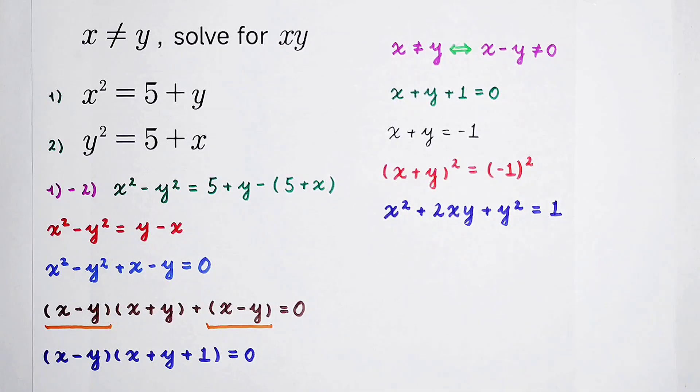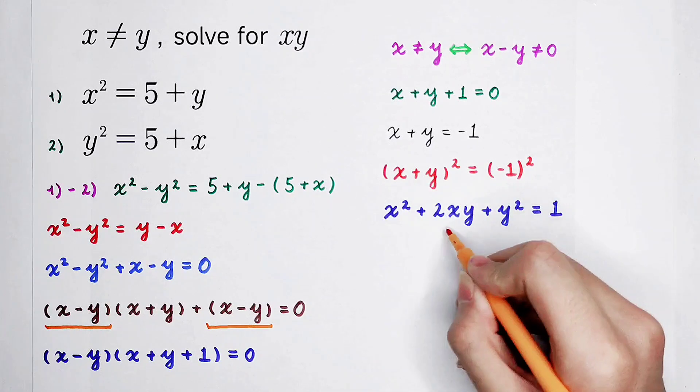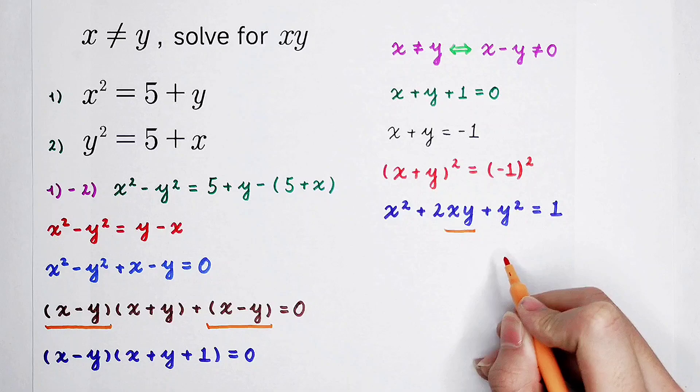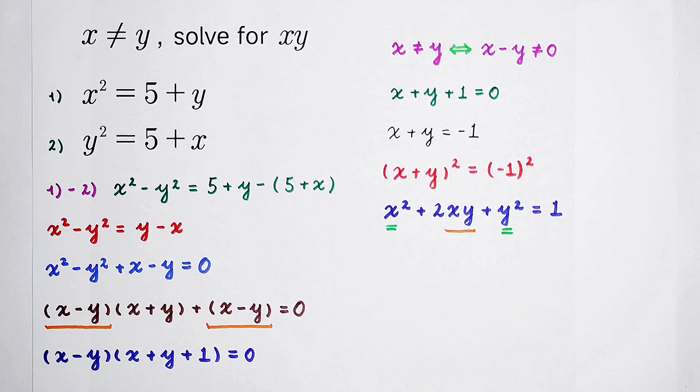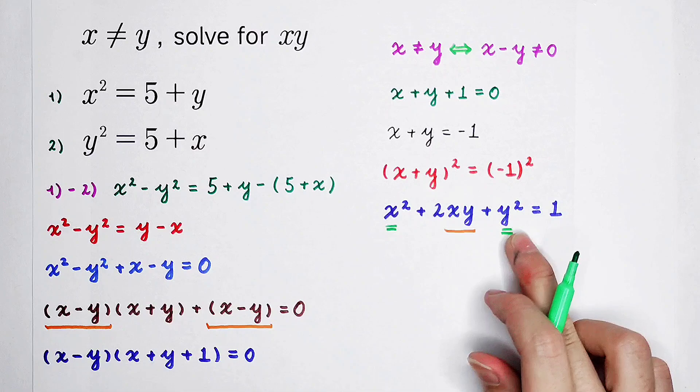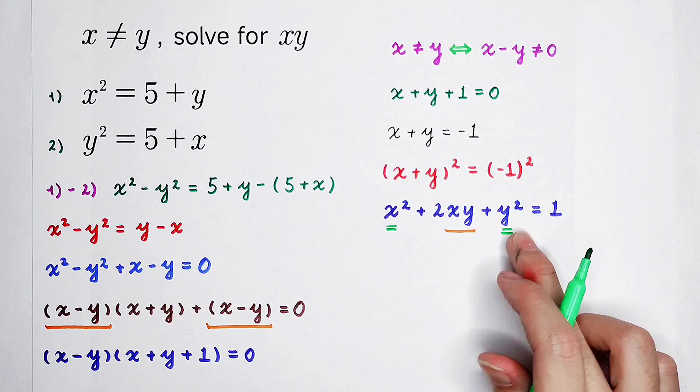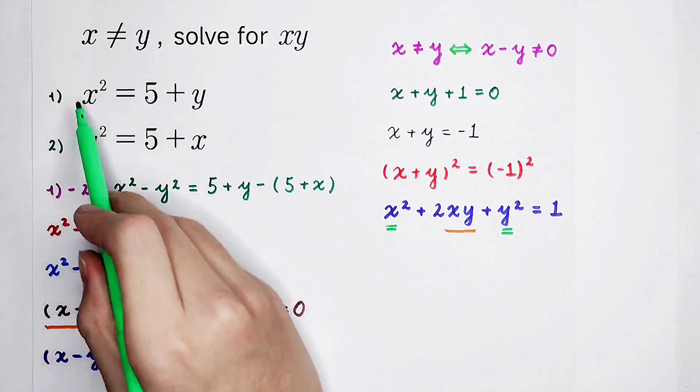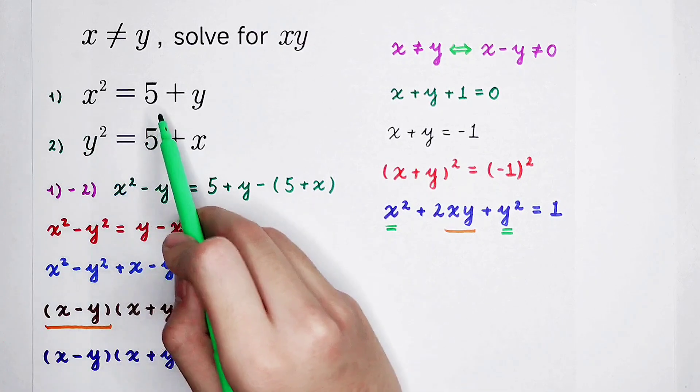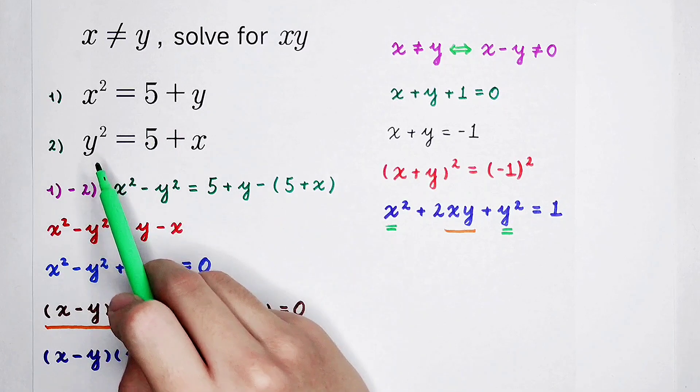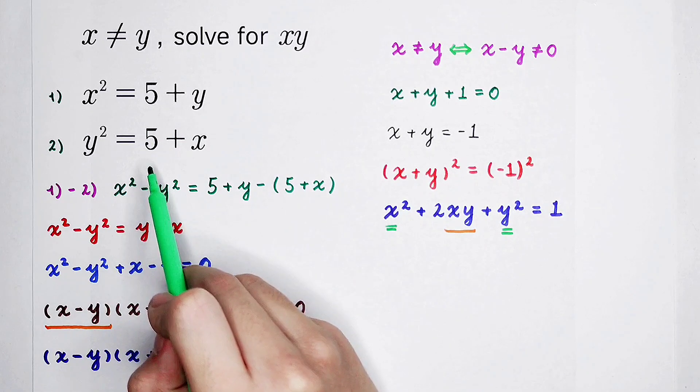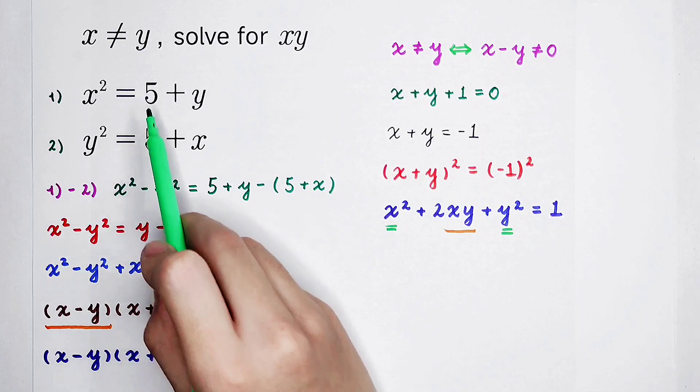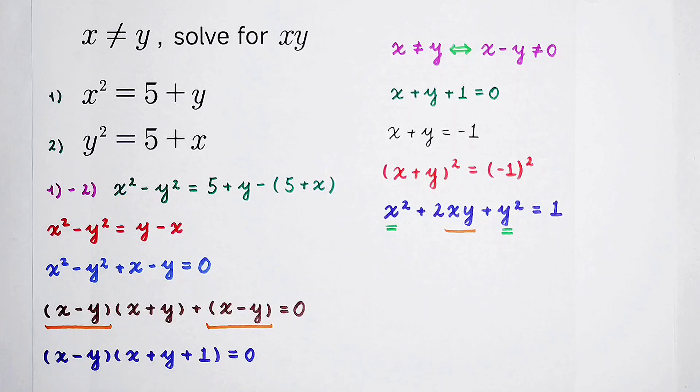x plus y. Here appears x, y. But now, we have a new problem. How should we deal with these two guys? Take a look at our original equation. x squared is 5 plus y, and y squared is 5 plus x. So, now, we can add these two equations together.